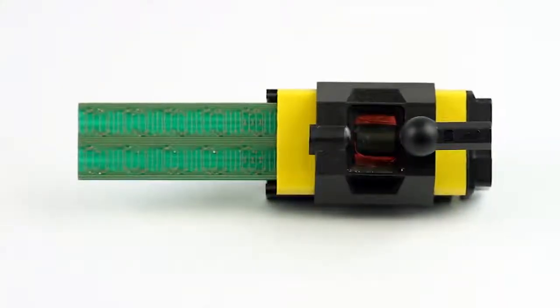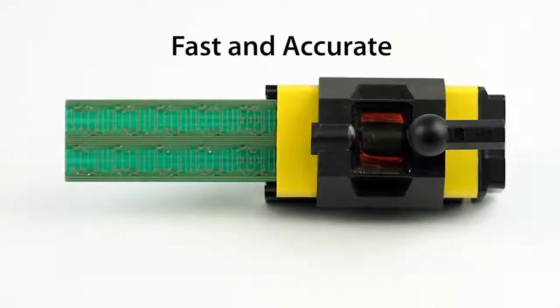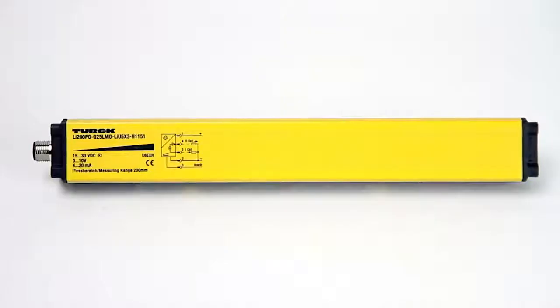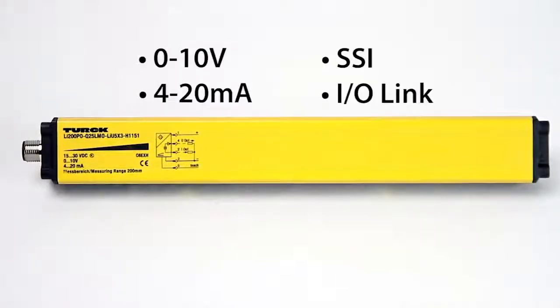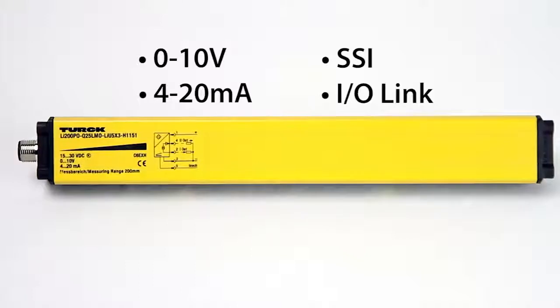Utilizing this inductive RLC circuit allows for faster and more accurate readings over many common output types such as 0-10 volts, 4-20 milliamps, SSI, or IO link, as well as smaller overall packages.